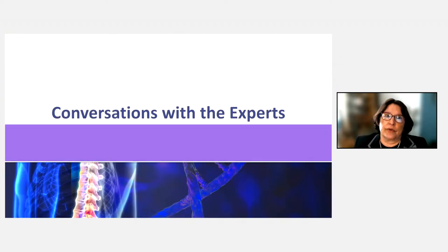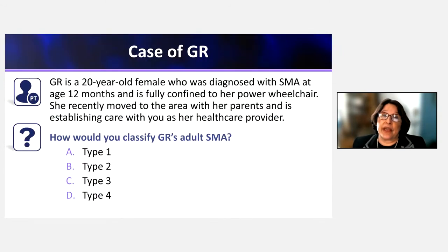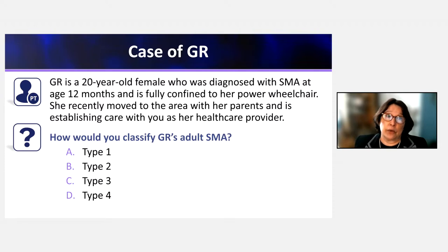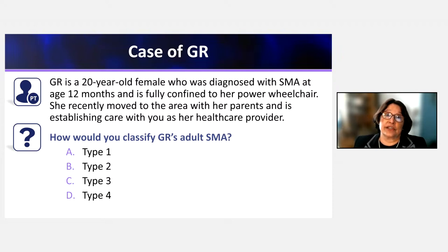Now let's go into cases. This is the case of GR — a 20-year-old woman diagnosed with SMA at 12 months of age. She is wheelchair-confined and uses a power wheelchair. She recently moved to the area with her parents and is establishing care with a new healthcare provider. The question is: how would you classify GR's adult SMA?